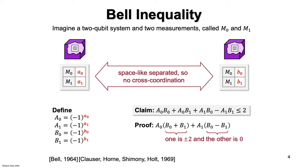If B zero and B one have the same sign, then B zero plus B one can be as large as two, but B zero minus B one is zero. So in that case, the upper bound is two.